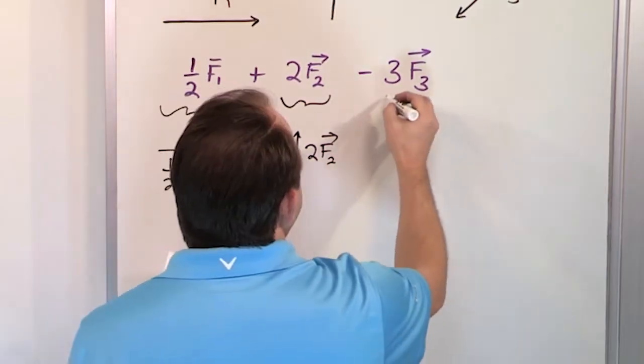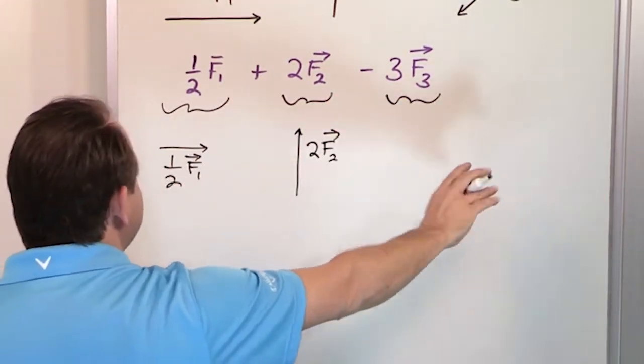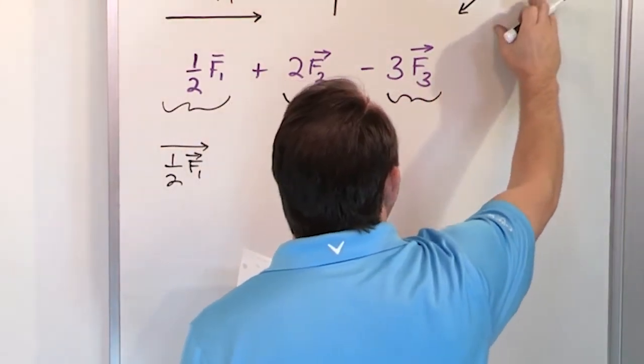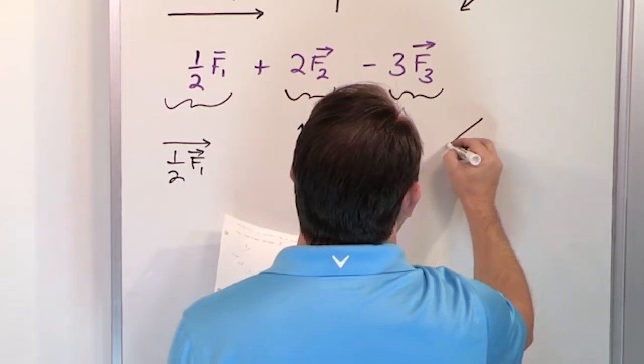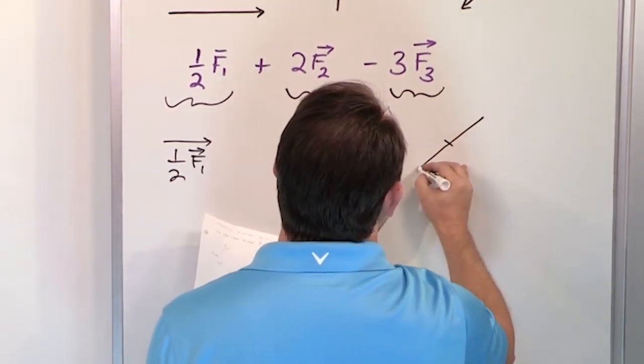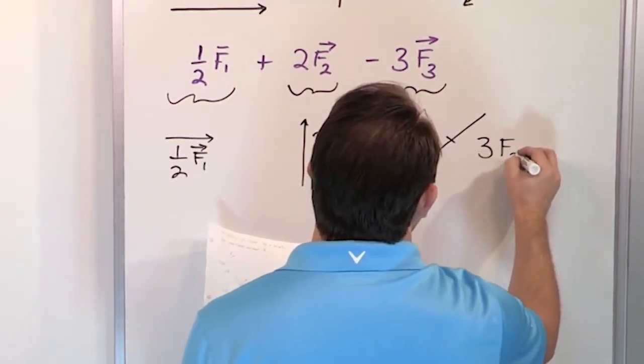And then what I'm going to have is, notice I'm not doing anything with adding, I'm not doing anything with subtracting. I'm just figuring out what is 3 times F3. Well, I'll try to do my best. So this is one length of F3, here's second length of F3, here's the third length of F3. I'm going to call that pretty close to 3 times vector F3.